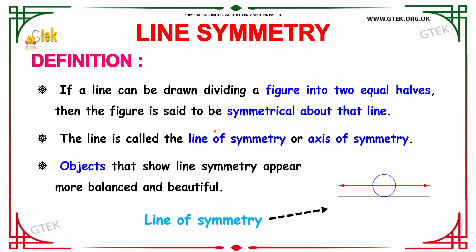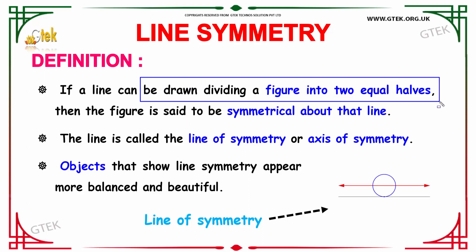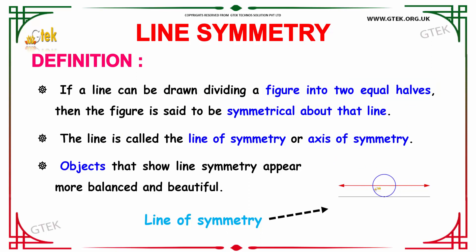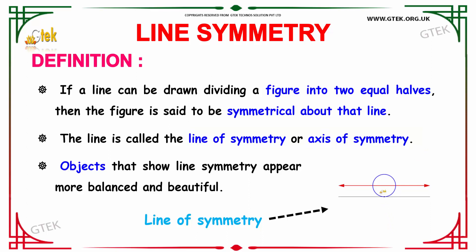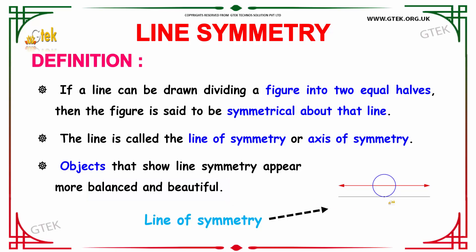Let us see what is meant by line symmetry. If a line can be drawn dividing a figure into two equal halves, then the figure is said to be symmetrical about that line. For example, if you have a circle and draw a line at its diameter, it is said to be symmetrical about the diameter. This line is called the line of symmetry or the axis of symmetry. Objects which show line symmetry appear to be more balanced and beautiful.